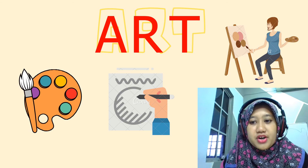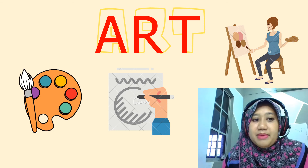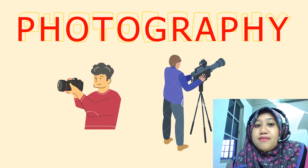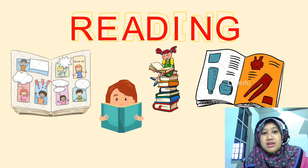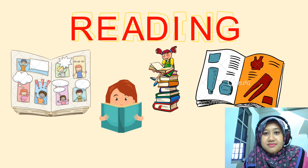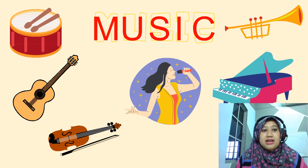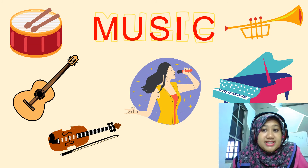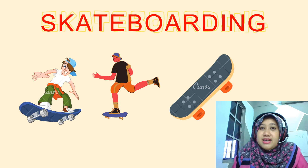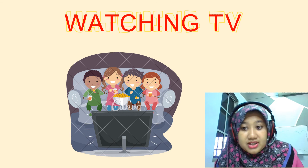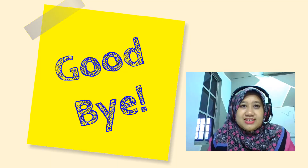Here are some examples you can use for your speaking activity. For art: I like art, I like painting, I like drawing. For photography: I like photography, I like taking photos, I like recording videos. For reading: I'm into reading, I like reading comic books, story books, or magazines. For music: I'm interested in music — I like to play the drum, guitar, violin, piano, or trumpet. I like singing. For skateboarding: I'm into skateboarding, I like skateboarding. For TV: I like watching TV, I don't like watching TV, I'm not interested in watching TV.